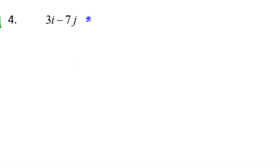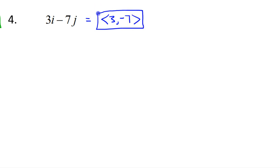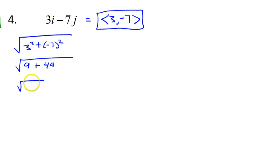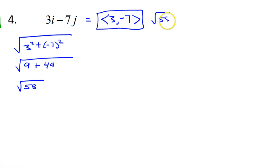Number 4: the component form is (3, -7). The magnitude is the square root of 3² + (-7)² = the square root of 9 + 49 = the square root of 58, which does not simplify.